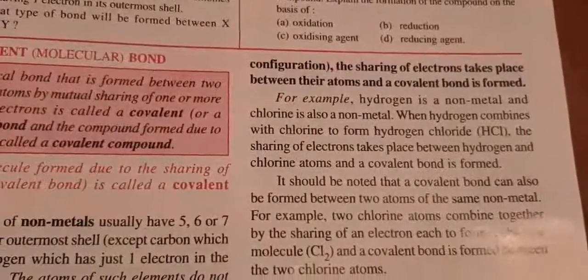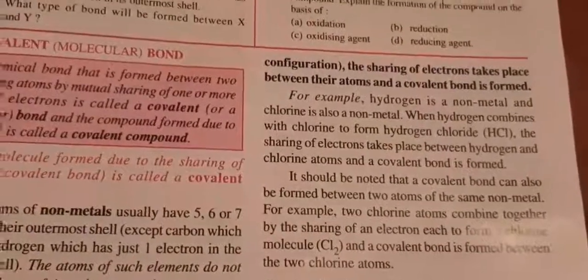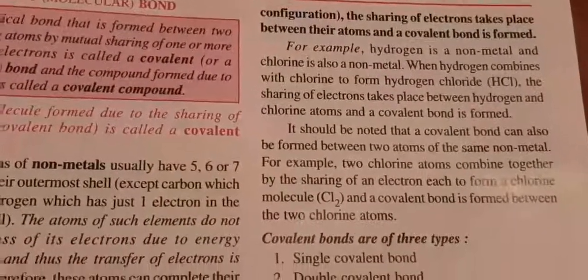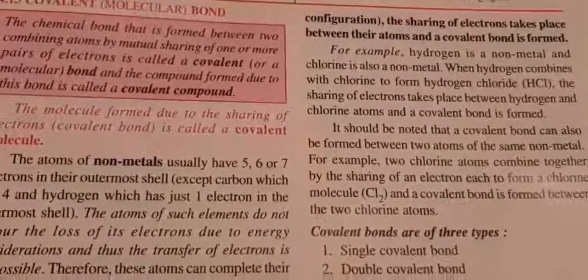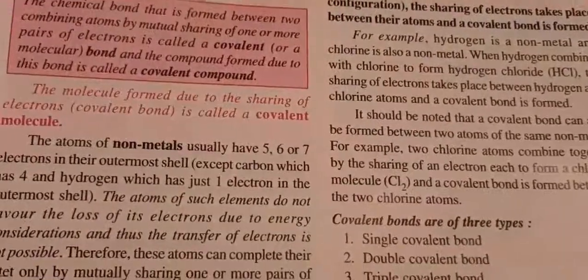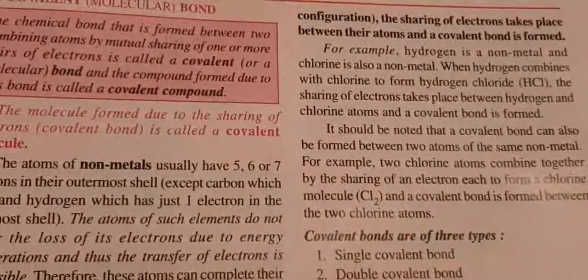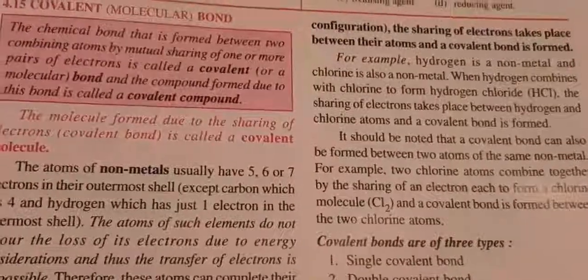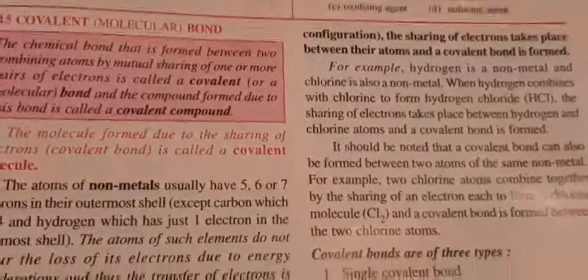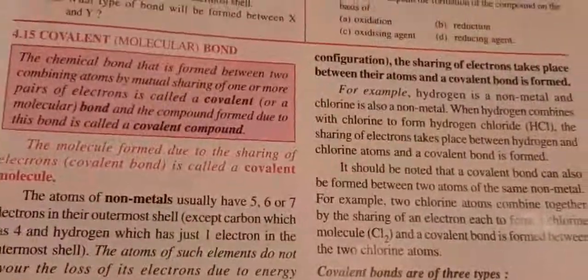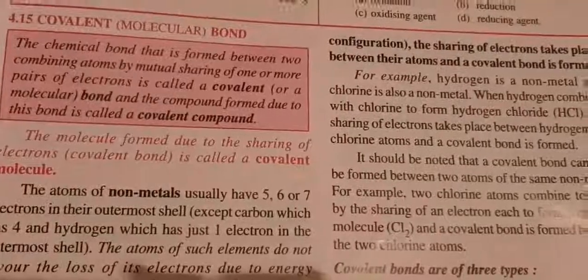If we talk about hydrogen, it is a non-metal, and chlorine is also a non-metal. When hydrogen and chlorine combine with each other, none of them is having a positive or negative charge — they are neutral. Hydrogen requires one electron and chlorine also requires one electron to complete its octet. Hydrogen by gaining one electron will acquire helium's electronic configuration. Whereas chlorine is 2, 8, 7 — it requires one electron. So from both sides, one electron each will come and a pair of electrons is formed, which will be shared equally between the two atoms.